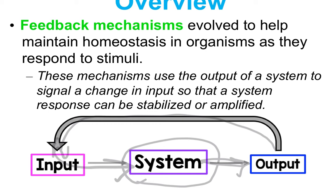Every system has a homeostasis and some sort of output. That output causes some sort of input, which is fed back into the system, and this can be a positive or negative feedback mechanism. A typical example of negative feedback is the human body regulating body temperature. We are endotherms. When our body temperature rises above normal, the brain signals organs including your skin to release heat as sweat. The sweat cools the body back to normal — that is negative feedback.